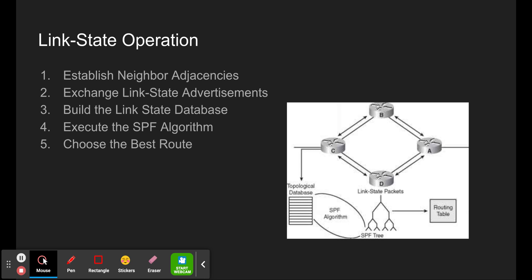To maintain routing information, OSPF routers complete a generic link state routing process. The link state routing steps completed by the router are: establish neighbor adjacencies, exchange link state advertisements, build a link state database, execute the SPF algorithm which creates the SPF tree, and then choose the best route.